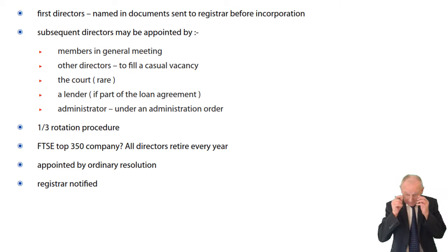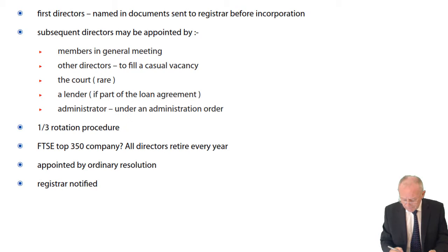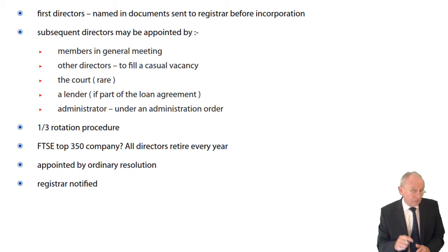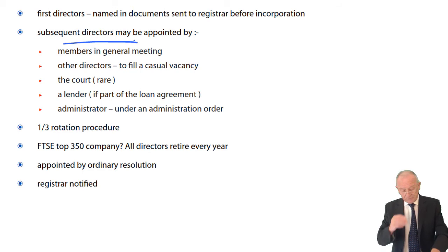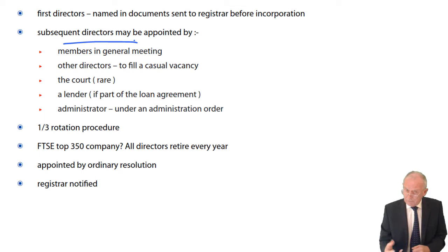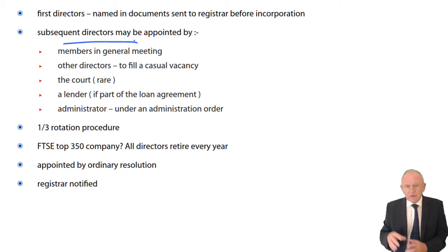Appointment of directors: the first directors are named in the documentation filed with the registrar when applying to register a company. They are often the first subscribers to the memorandum and therefore often the first members. For subsequent directors, the basic premise is that members appoint the directors who are going to be responsible for running the company. But if there's a casual vacancy on the board, the directors normally have the power themselves to appoint somebody to fill that vacancy.